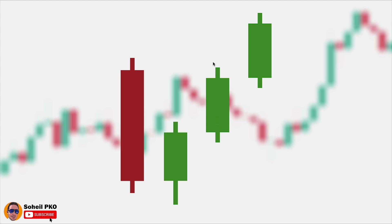The third candle is our confirming candle — it's at least a medium candle and the longer this candle, the better the probability of the reversal. For example, if it closes above the first candle's opening price, it becomes more significant, or if it closes above the first candle's high, it gives even more probability that the price is going to advance.